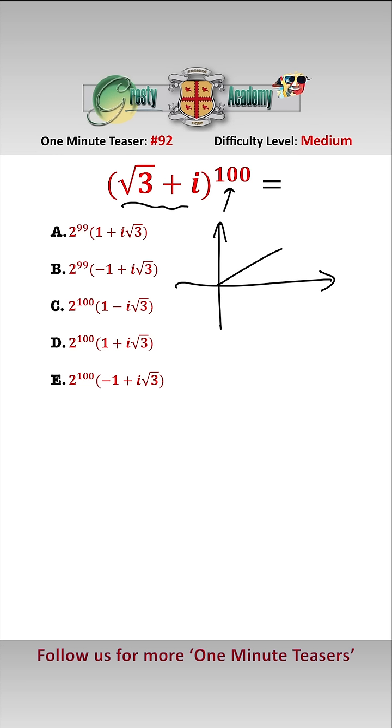So let's have a look at an Argand diagram where we have here the point √3 + i. Therefore this distance here is 2 by Pythagoras, and so √3 + i is equivalent to 2e^(iπ/6), as this angle here is π/6.